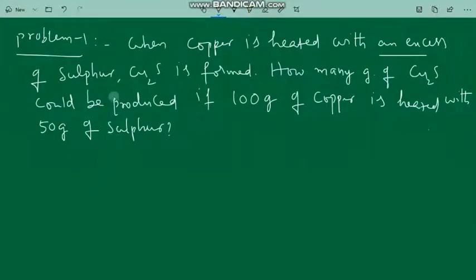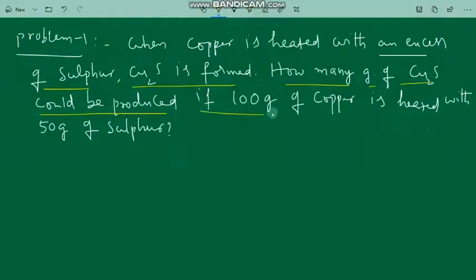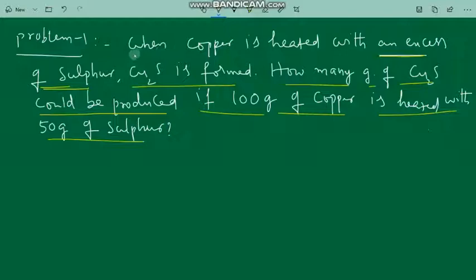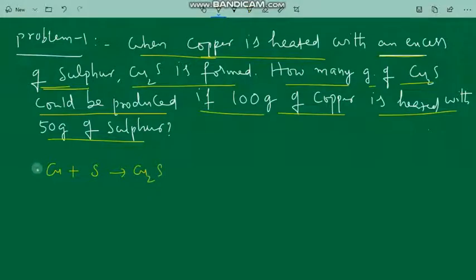Problem: When copper is heated with an excess of sulfur, copper sulfide is formed. How many grams of copper sulfide could be produced if 100 grams of copper is heated with 50 grams of sulfur? Since the question states an excess of sulfur, it is clear that sulfur is not the limiting reagent — copper is the limiting reagent. As per the equation, 2 moles of copper give 1 mole of copper sulfide.